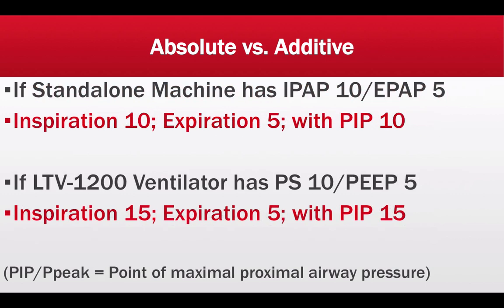So how does that translate into real-world application? If you have a standalone machine such as the BiPAP Vision by Respironics set to IPAP 10 and EPAP of 5, when the patient initiates inspiration, the machine will deliver 10 centimeters of water. When the patient exhales, the machine will deliver 5 centimeters of water pressure. Peak inspiratory pressures during inspiration would be 10 centimeters of water.